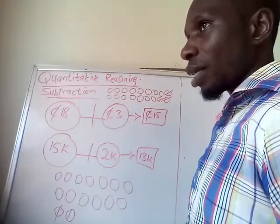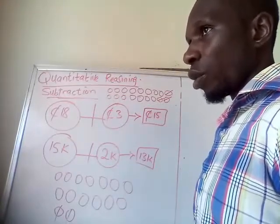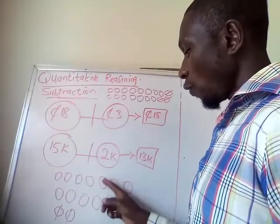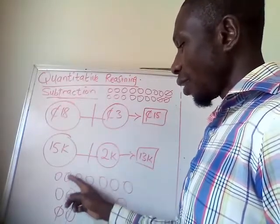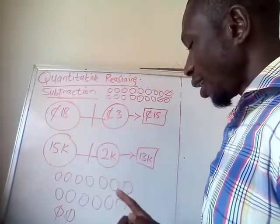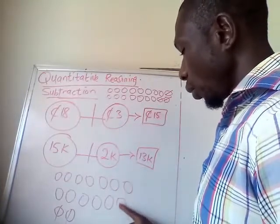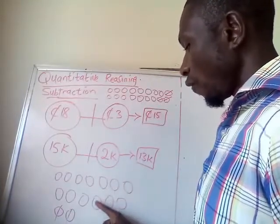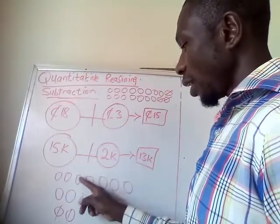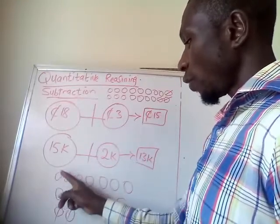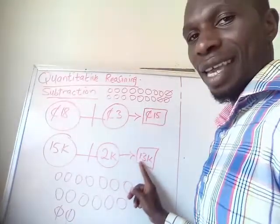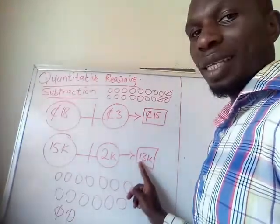Now we count the remaining kobo that are left: 1, 2, 3, 4, 5, 6, 7, 8, 9, 10, 11, 12, 13. We have 13 remaining, so the answer is 13. That is how to solve these equations.